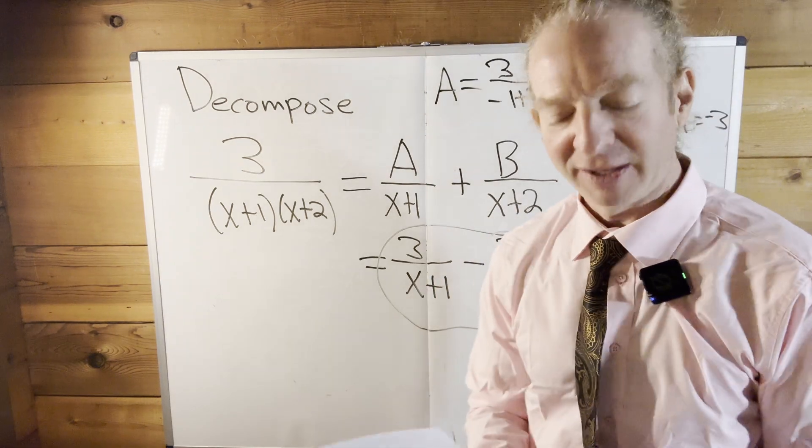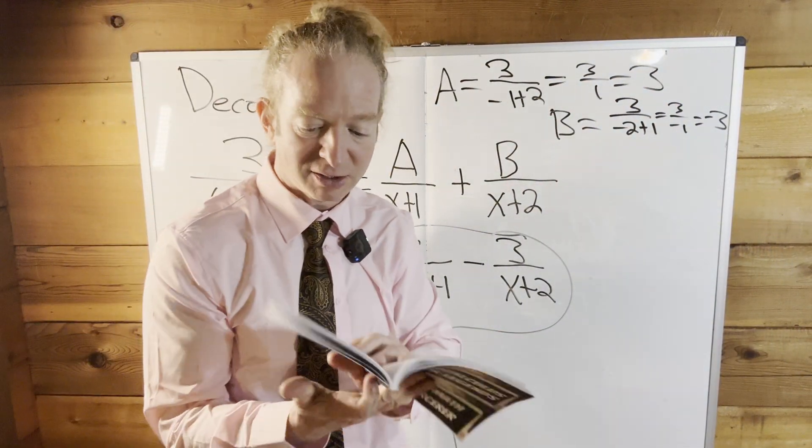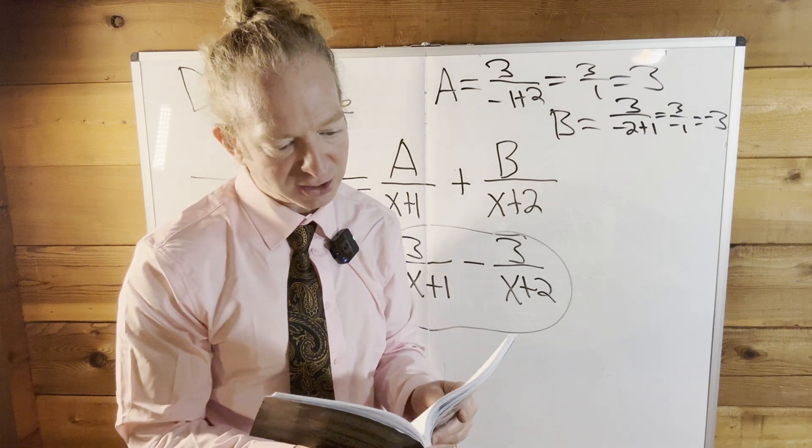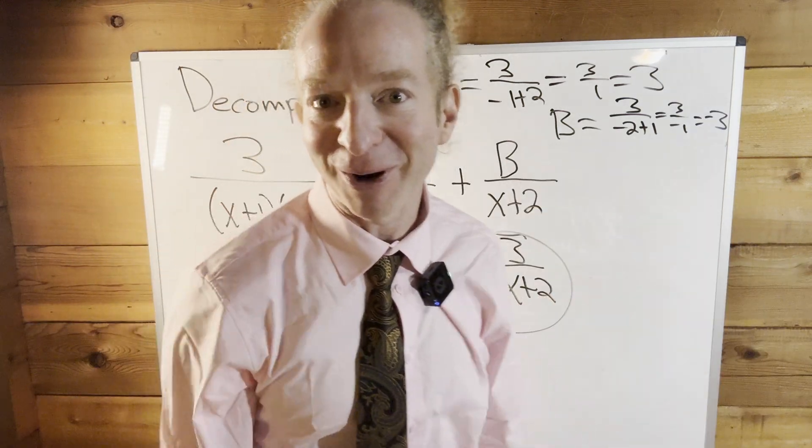Oliver Heaviside, I believe. Let me just check. I have all the answers. This book has full solutions to every single example and every single exercise. So, I have 3 over X plus 1 minus 3 over X plus 2. We did it. We did it right.